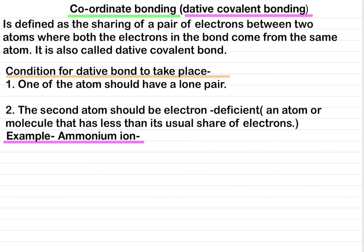Coordinate bonding is defined as the sharing of a pair of electrons between two atoms where both the electrons in the bond come from the same atom. It is also called a dative covalent bond.